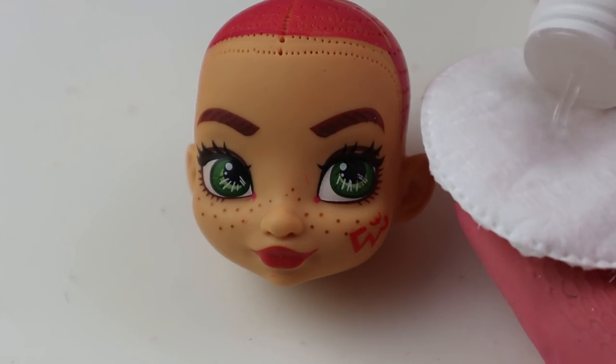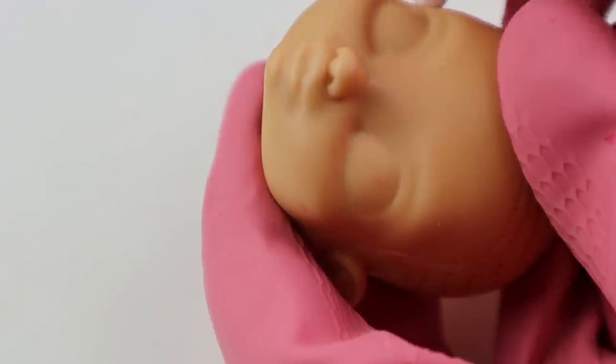Since the head is made out of vinyl I can rub off the paint with pure acetone. I think these dolls would be super pretty with inset eyes. They have these molded huge eyes so I think it would work nicely.